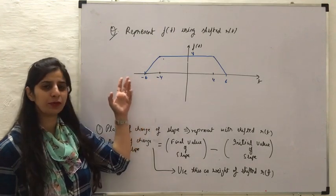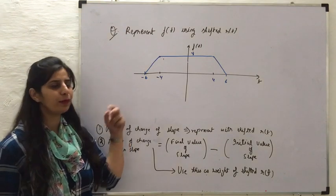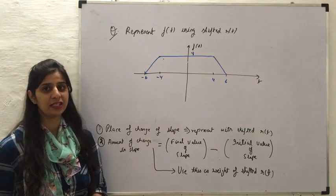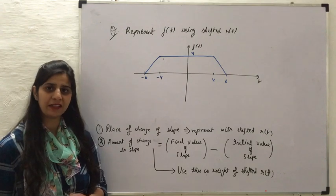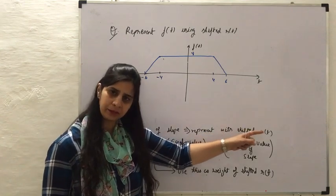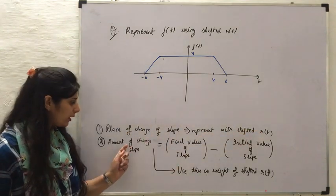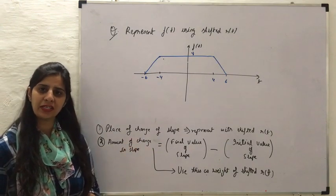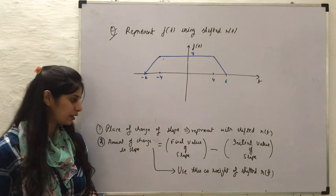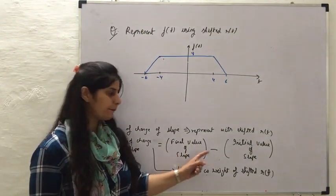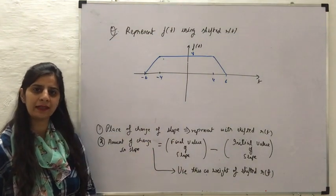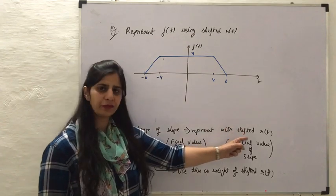This is the signal that I want to represent using shifted ramp signal. I will divide this problem into two parts. The first part is to find out at which places the changes are occurring, and those instants I can represent with shifted R of T. The next task is to find out the amount of change in slope, given by the final value of slope minus the initial value of slope. This slope change will be used as the weight of the shifted ramp signal.